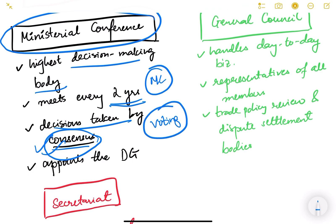Decisions in the Ministerial Conference are taken by consensus — not by voting. In the IMF and World Bank, countries had a voting percentage, with the USA having the maximum in the IMF. But in WTO it's different: every country has a say, and even if one country differs, that decision is not considered taken. Consensus means everybody must agree unanimously.